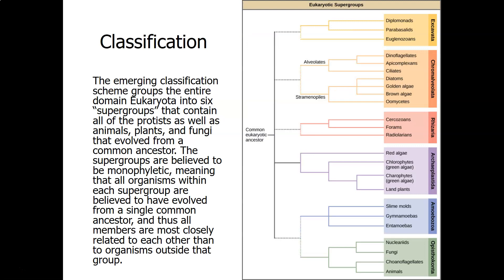Now this is a list of the classification for the protozoans — well, for the algae and the protozoans — which are together the Kingdom Protista.